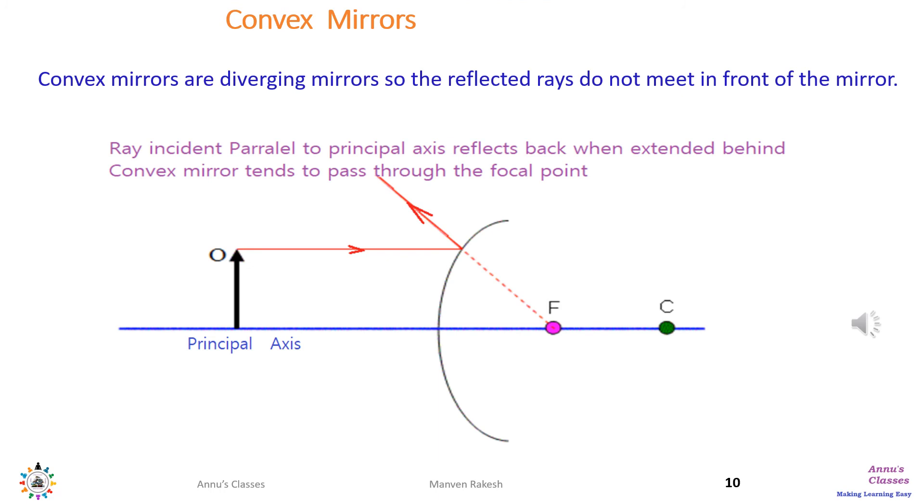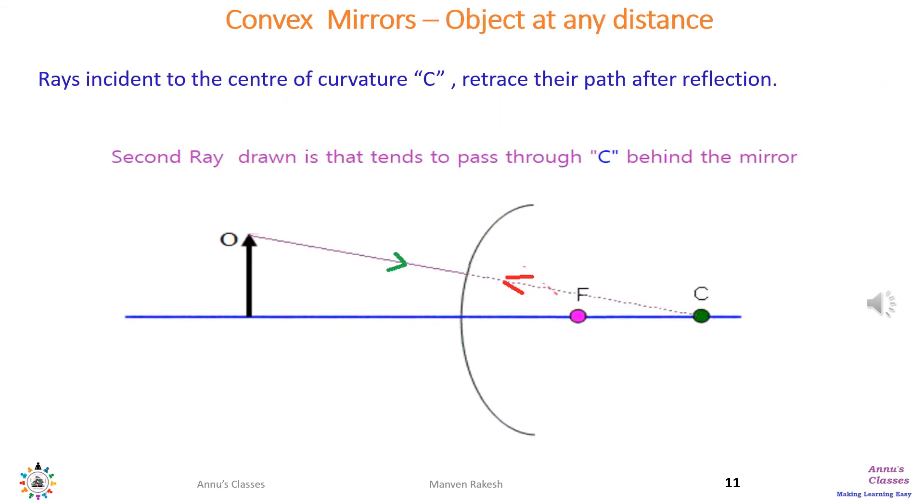Convex mirrors are diverging mirrors. To draw the ray diagram, first ray is parallel to the principal axis, which after reflection is diverted and extended behind the convex mirror to pass through the focal point. Second ray tends to pass through C behind the mirror. Rays incident on center of curvature C retrace their path after reflection.